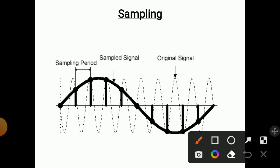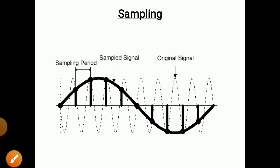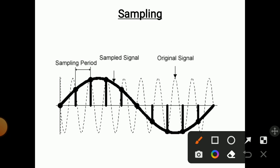In this diagram, the original signal is shown here — the dotted signal is the original signal, which is in sinusoidal form. We are taking samples at some intervals: this is our first sampling point, second, third, fourth. These sampling points are the intervals at which we are taking samples — we are taking values from the original signal. These are our samples, and when we connect them, this is our sampled signal.